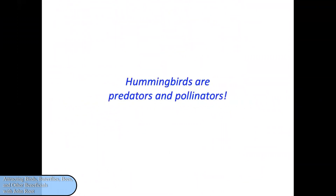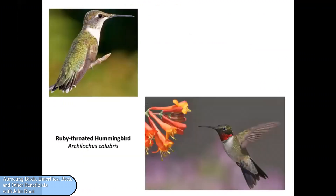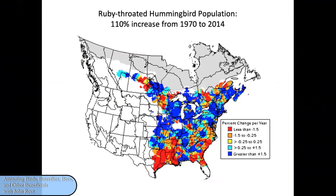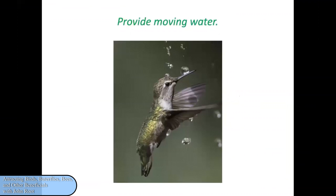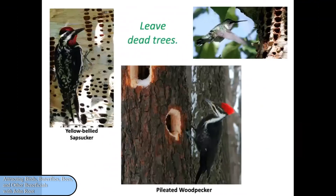Now let's talk about hummingbirds. They are beneficial because they're both predators and pollinators — they eat a lot of insects and are expert hunters. The only hummingbird you're likely to see here in New England is the ruby-throated hummingbird. We don't need to be concerned about their population because it's doubled in the last half century. People love hummingbirds so much that we enjoy attracting them to our property. Provide moving water — they love it — a place to rest, and snags for perching. When you leave dead trees, you give woodpeckers and sapsuckers a chance to explore the trees for insects. When the trees bleed sap, that attracts insects which the hummingbirds can help themselves to.